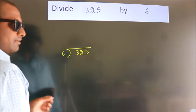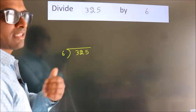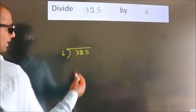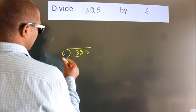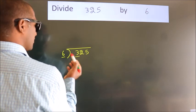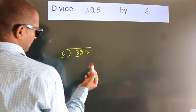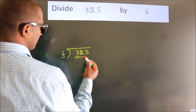This is your step 1. Next, here we have 3. Here 6. 3 is smaller than 6, so we should take two numbers, 32.